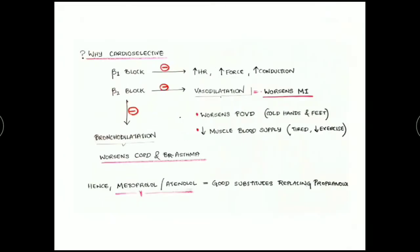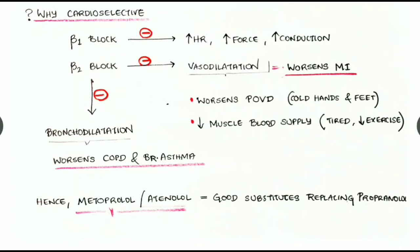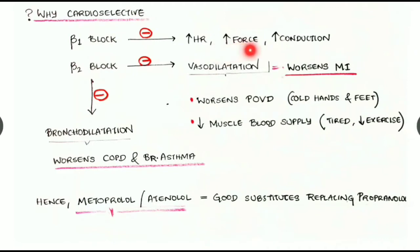The rationale for cardioselective drugs: non-selective beta blockers block both beta-1 and beta-2. Beta-1 blockade inhibits increased heart rate, force of contractility, and conduction. When combined with beta-2 blockade, there is also inhibition of vasodilatation, which can worsen POVD — peripheral occlusive vascular disease — resulting in cold hands and feet, reduced muscle blood supply, fatigue, and exercise intolerance.